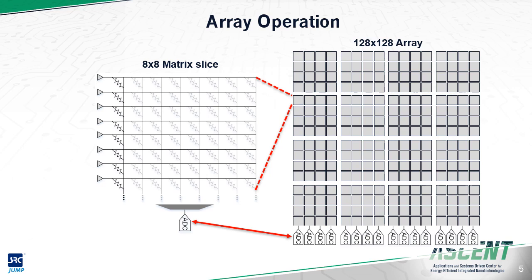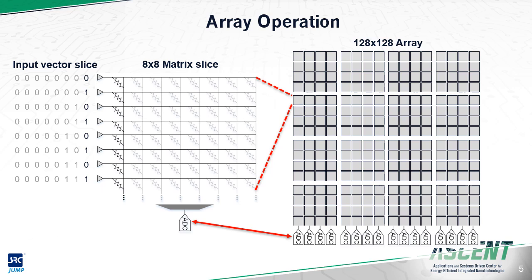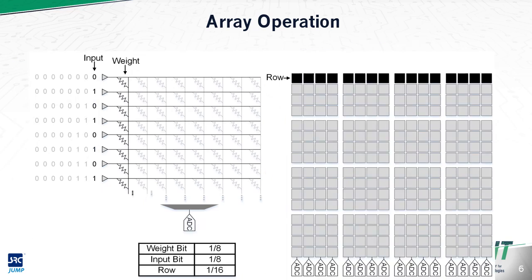The last element is the input data, shown here on the far left. The data shown is 8 of the 128 elements from the vector to be multiplied with our matrix. Since we are implementing an 8-bit neural network, there will be 8 binary values. The operation of this array can be thought of as three for-loops. We first loop through the 16 rows of the array, then through the 8 input bits, and lastly through the 8 weight bits. We begin with input bit 1, weight bit 1, and row 1.